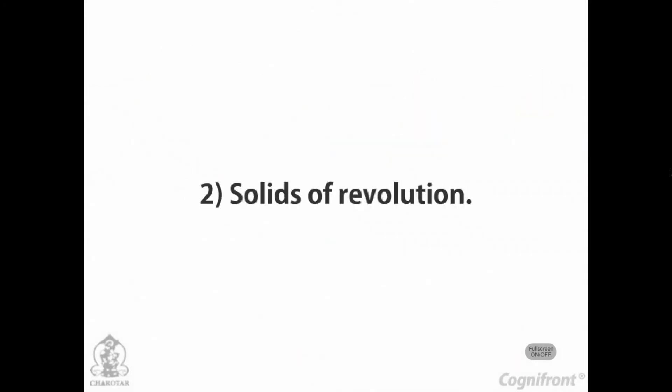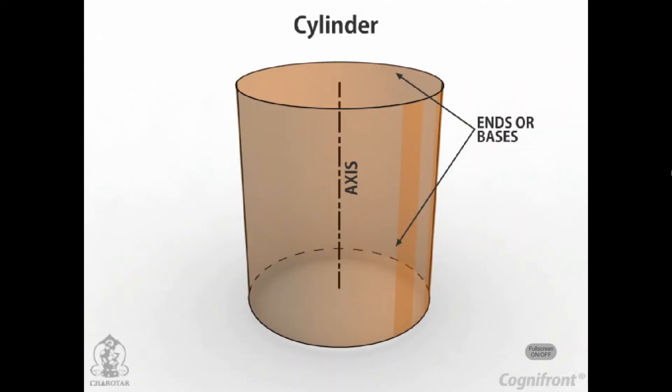Solids of Revolution. Cylinder: A right circular cylinder is a solid generated by the revolution of a rectangle about one of its sides which remains fixed. It has two equal circular bases. The line joining the centers of the bases is the axis, perpendicular to the bases.